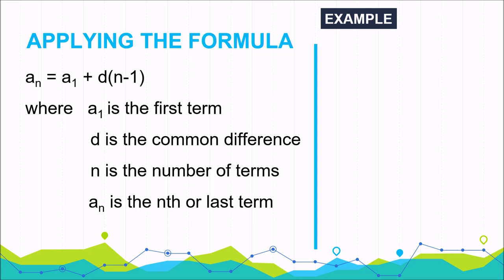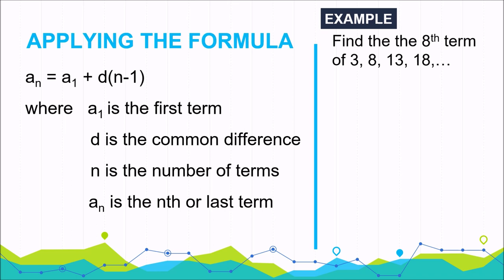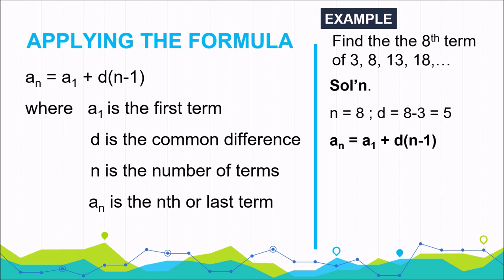Let us try an example: find the eighth term of the sequence 3, 8, 13, 18, and so on. The value of n is 8, and the common difference is 5 — we can get 5 from 8 minus 3, or 13 minus 8, or 18 minus 13. Plugging into the formula, a sub 8 equals 3 plus 5 times the quantity 8 minus 1, giving a sub 8 equals 38.